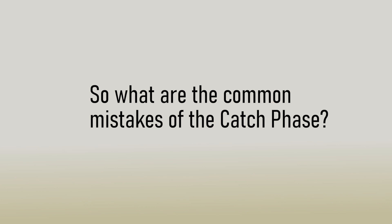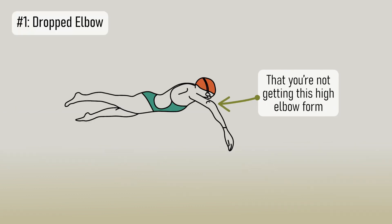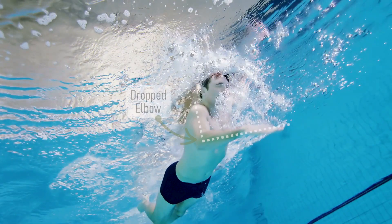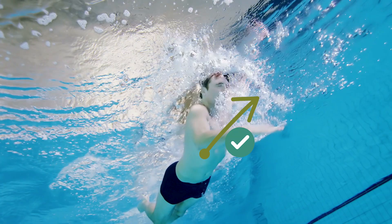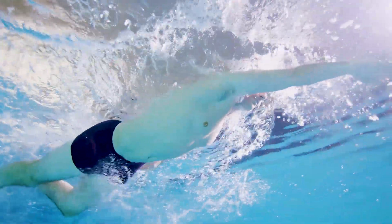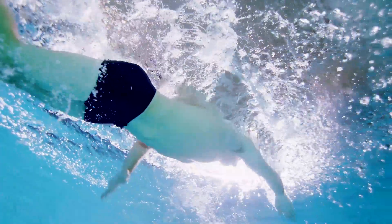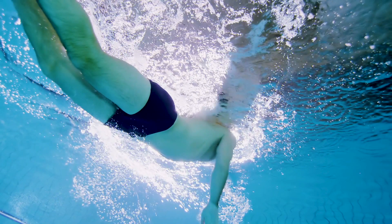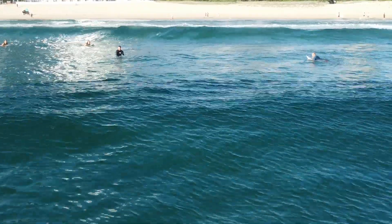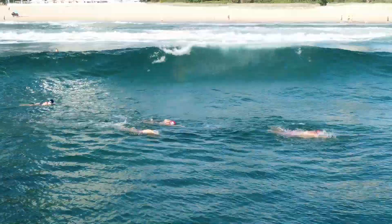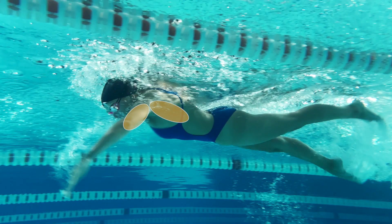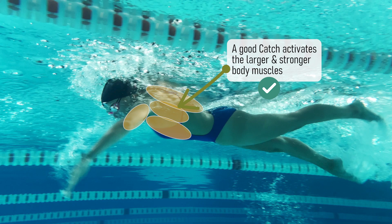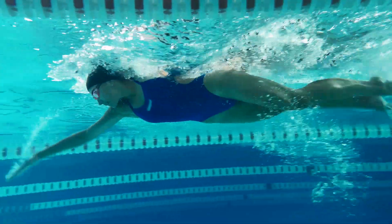The common mistake with the catch phase is simply not getting the forward elbow position. What reduces your propulsion is letting the elbow lead the way — referred to as a dropped elbow. We don't want to propel ourselves upwards, we want to propel ourselves forwards. A dropped elbow means you miss the majority of your propulsion in the pull phase and relies mostly on the smaller muscles in the back of your arm, which fatigue quicker in longer open water swims. A high elbow catch leads you into a stronger position that also utilizes the larger muscles of the lats, back muscles, and chest — bigger muscles that love to help you swim longer with less effort.